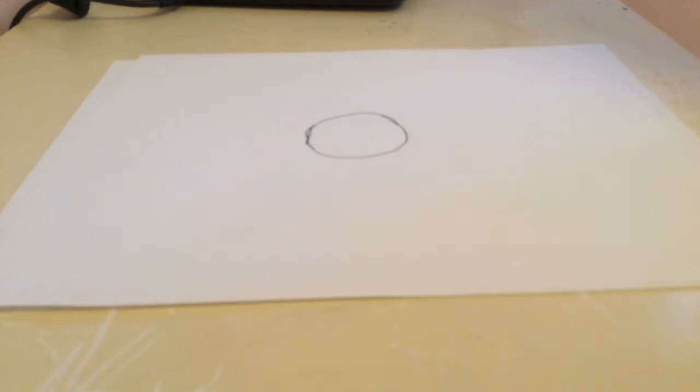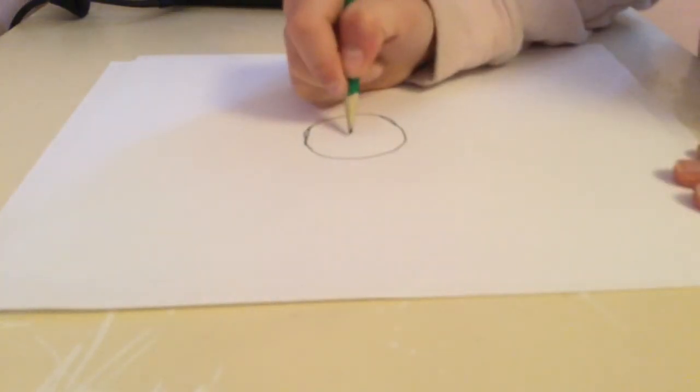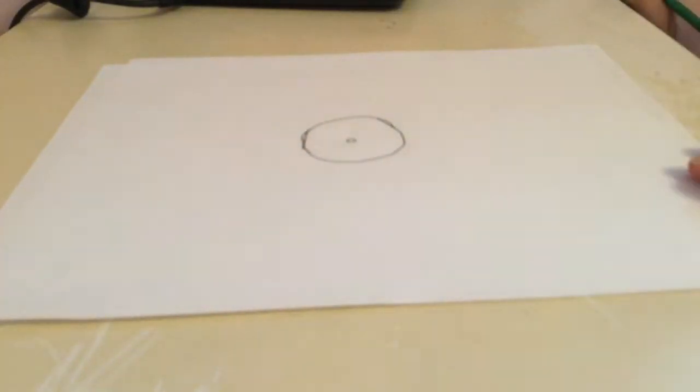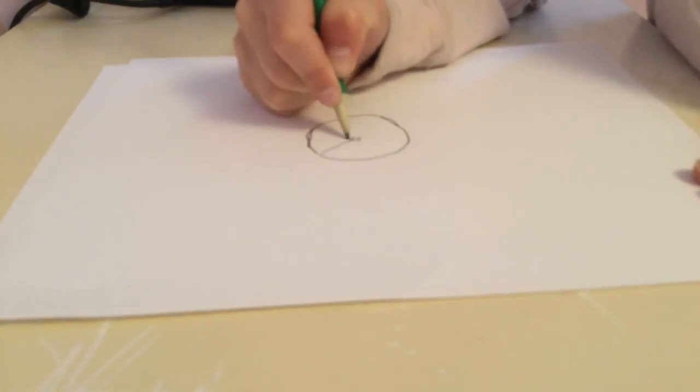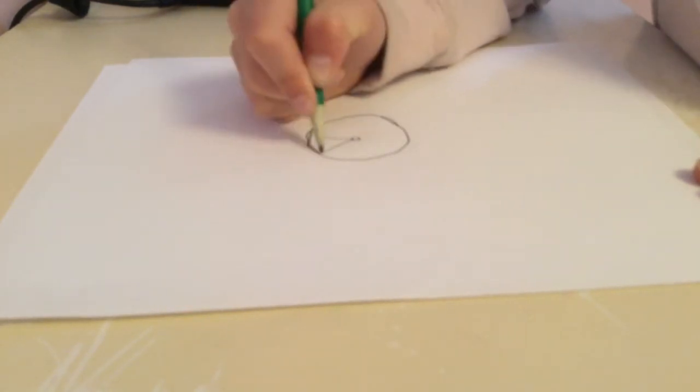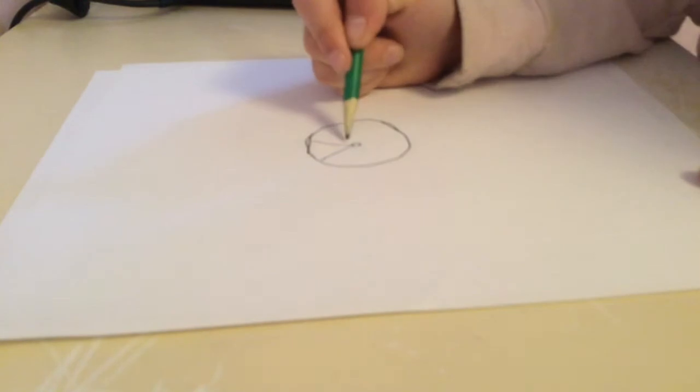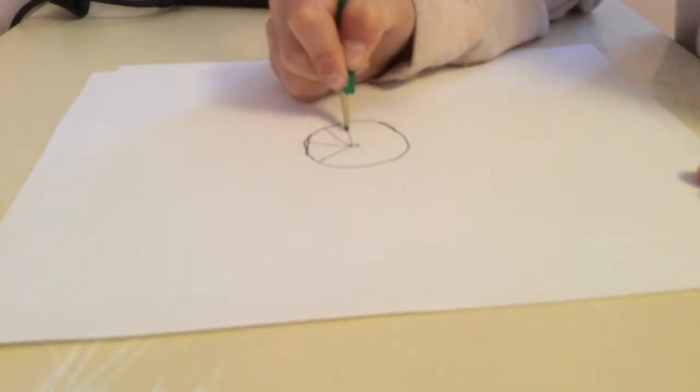Next thing you're gonna do is draw a circle in the middle, just like this. Next, you're gonna draw two lines coming out the side, just like that. You're gonna do the rest, but you don't have to draw two lines for each - you can just go like this.